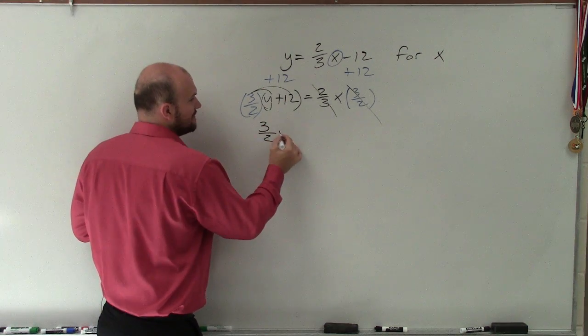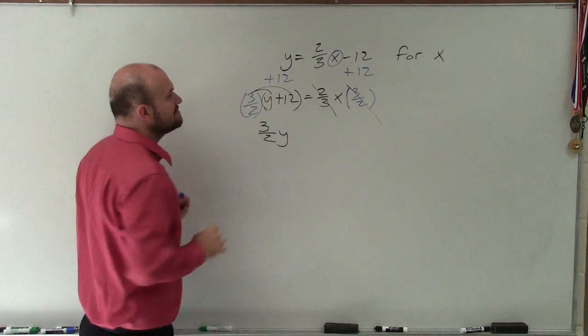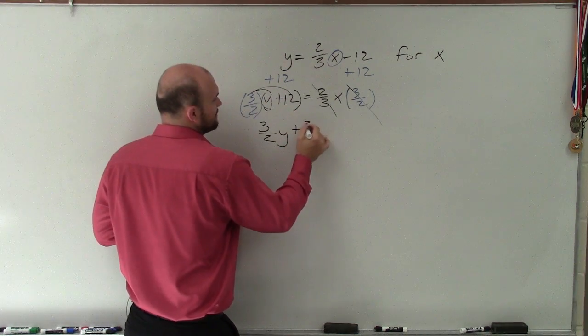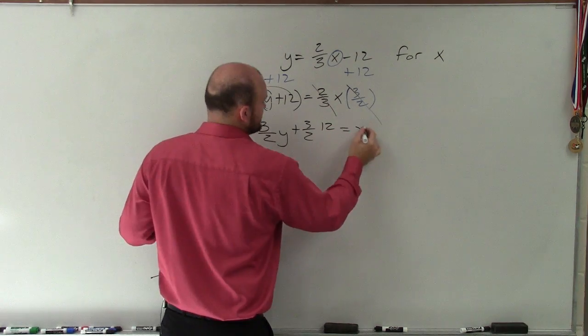So then when I do that, I have 3 halves y. 3 times 12, when you multiply this across, actually, I'll show this. It would be a positive 3 halves times 12 equals x.